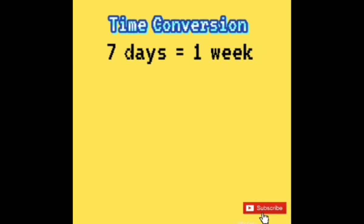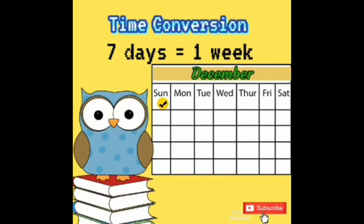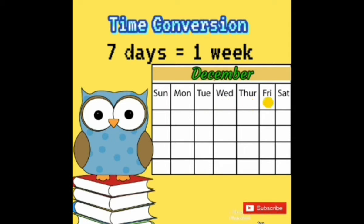7 days is equal to 1 week. Sunday, Monday, Tuesday, Wednesday, Thursday, Friday, Saturday.